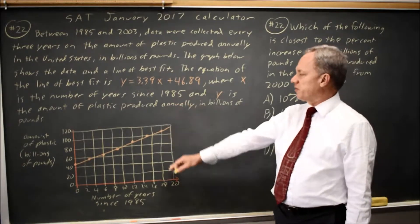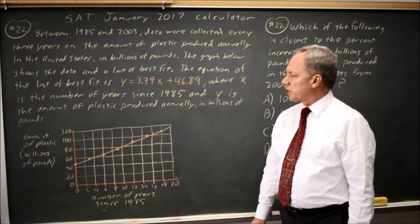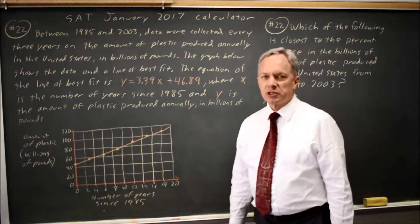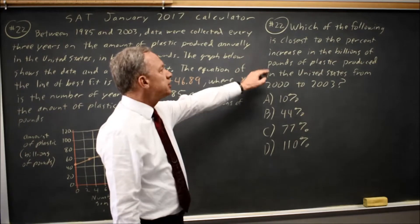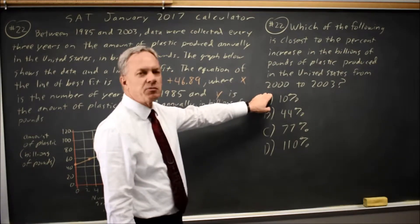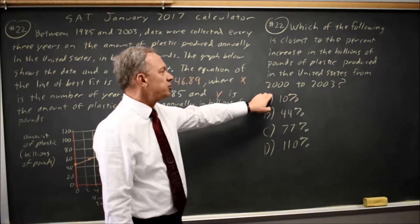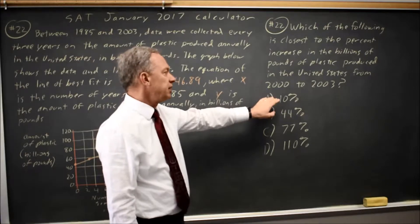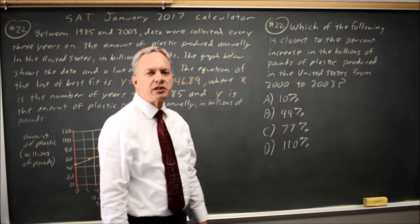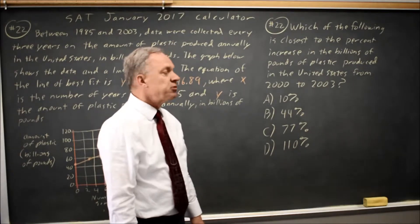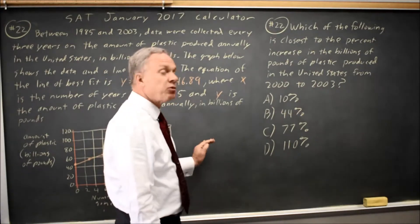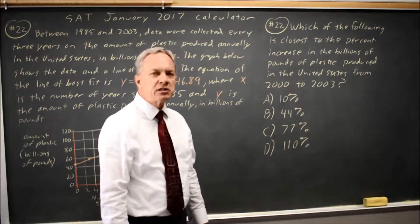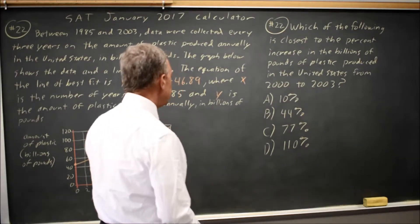We have a paragraph and a graphical display of data for billions of pounds of plastic produced in the United States, and the question is which is closest to the percent increase in the billions of pounds of plastic from 2000 to 2003. We notice the percent values are very different, so we don't have to put too much time in getting precise readings from the table because this table will be hard to read. We just need to be at least reasonably close.